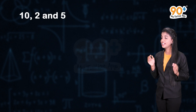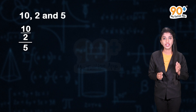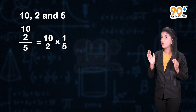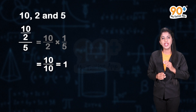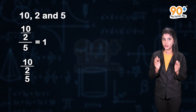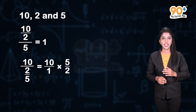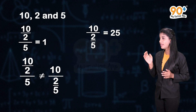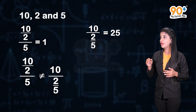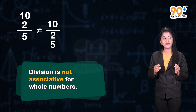Let's check this for division. Let us take three whole numbers 10, 2 and 5. What is (10 ÷ 2) ÷ 5? That is equal to 10/2 × 1/5 = 10 ÷ 10 = 1. Now, what is 10 ÷ (2 ÷ 5)? That is equal to 10 × 5/2 = 50 ÷ 2 = 25. So we can observe that (10 ÷ 2) ÷ 5 is not equal to 10 ÷ (2 ÷ 5). So we can say that division is not associative for whole numbers.